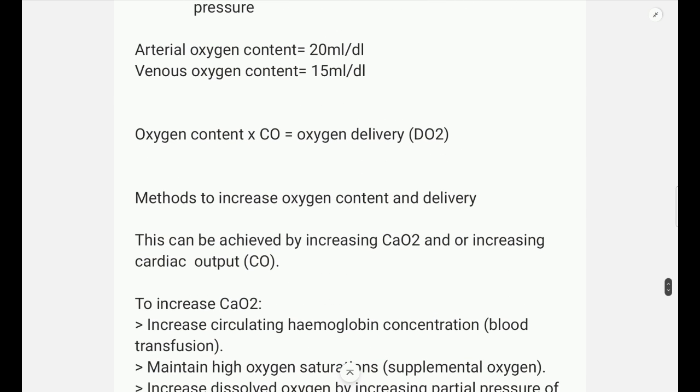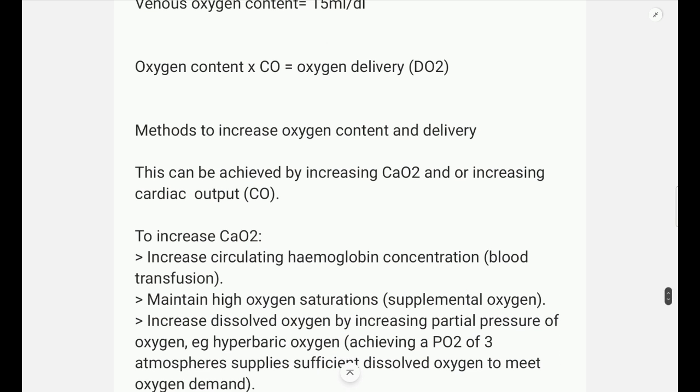Now when we calculate using this equation, we get the arterial oxygen content to be 20 ml per deciliter and the venous oxygen content to be 15 ml per deciliter. There is another term known as oxygen delivery or DO2. It can be calculated by multiplying oxygen content with cardiac output.